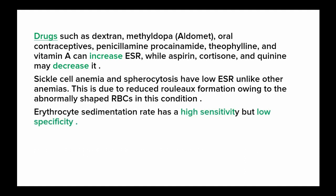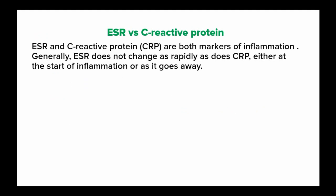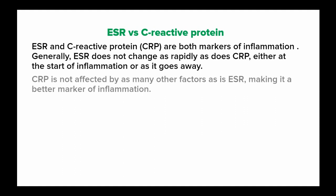The erythrocyte sedimentation rate has high sensitivity but low specificity. Another marker of inflammation is the C-reactive protein. Generally, the erythrocyte sedimentation rate does not change as rapidly as C-reactive protein, either at the start of inflammation or as it resolves. C-reactive protein is also not affected by as many factors as ESR, making it a better marker of inflammation compared to ESR.